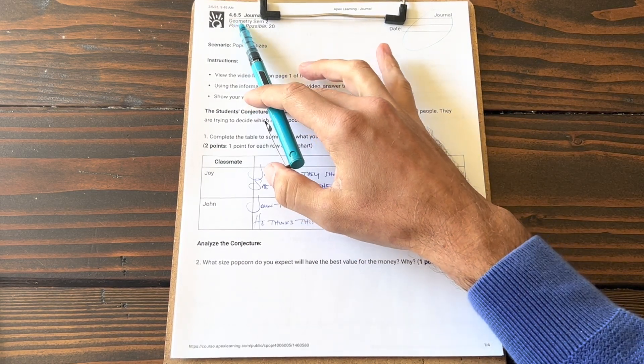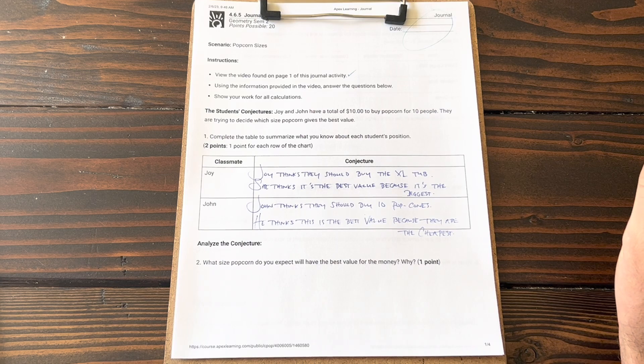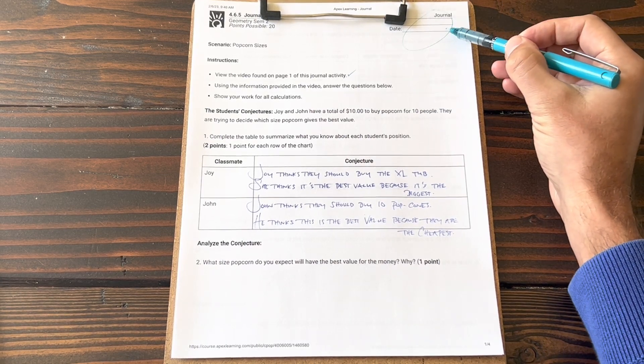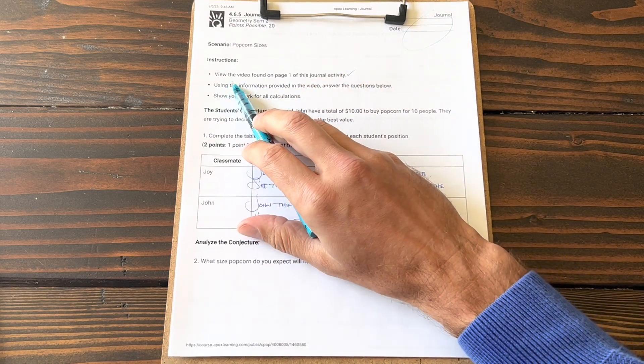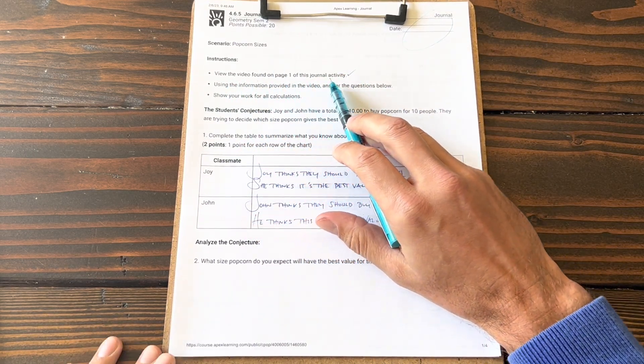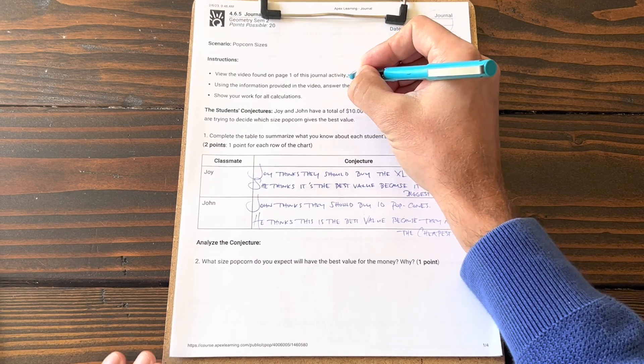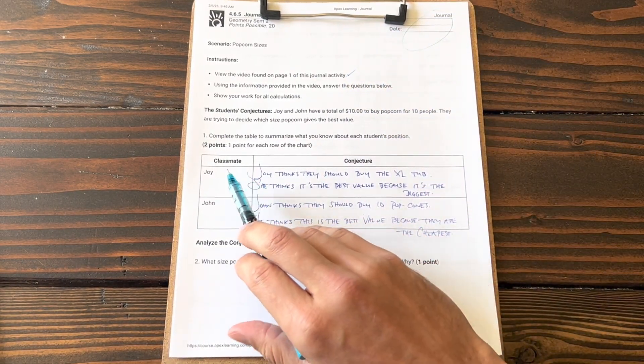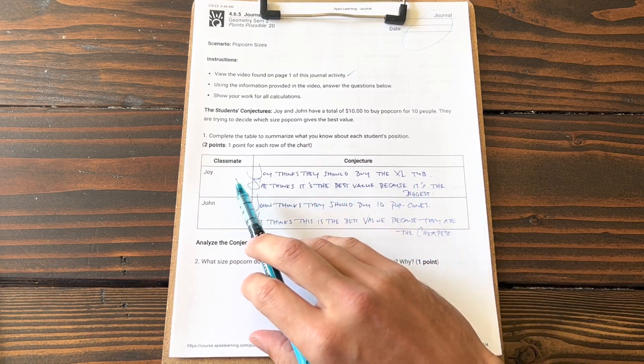Okay, here we go, 4.6.5 journal for geometry semester two. As always, make sure your name and date are on the assignment. View the video found on page one of this journal activity. If you haven't already watched it, go back and watch this video please so you can get the background information.